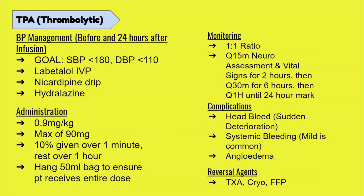For administration, the dosing is 0.9 milligrams per kilogram with a max of 90 milligrams. You'll give 10% of the dose as a push over one minute, and then the rest will be an infusion over one hour.